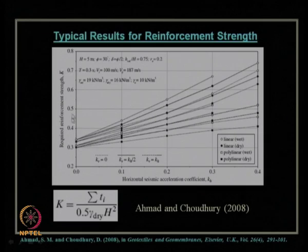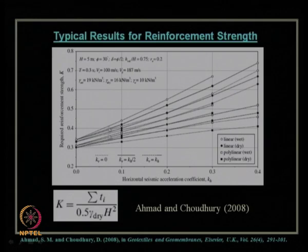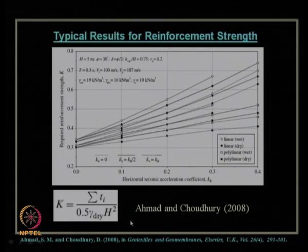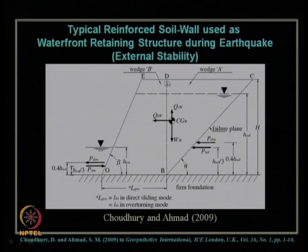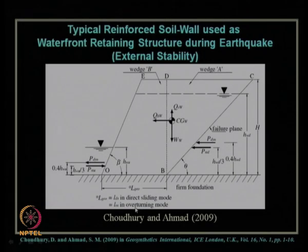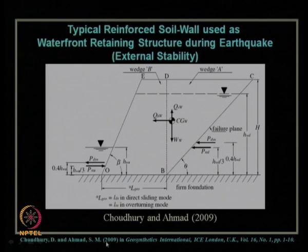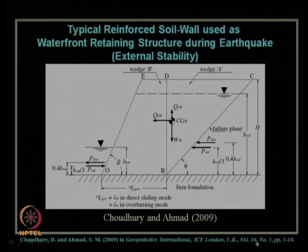The final design chart shows how much reinforcement strength is necessary to withstand hydrodynamic force and earthquake force of different k_h and k_v magnitudes. One can use this design chart to get the non-dimensional parameter of reinforcement strength required for stability. The external stability criteria for reinforced soil wall used as a waterfront retaining structure was considered using the two-wedge mechanism (wedge A and wedge B), considering both sliding and overturning modes of failure. Details are in Choudhury and Ahmed 2009 in Geosynthetics International, Institute of Civil Engineers London.